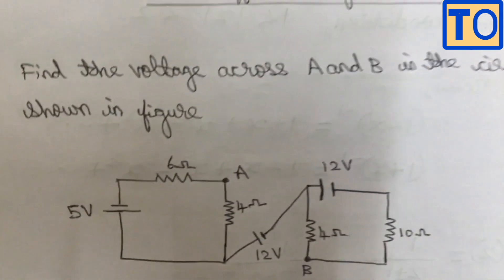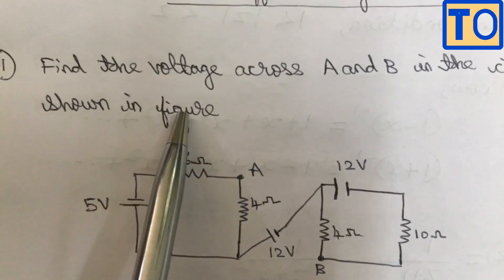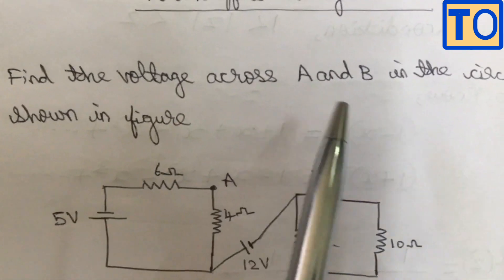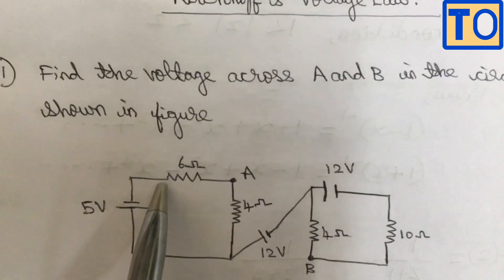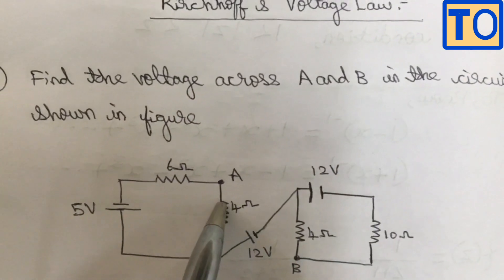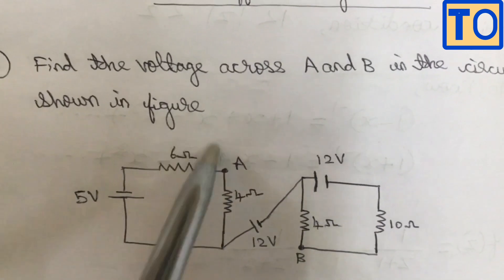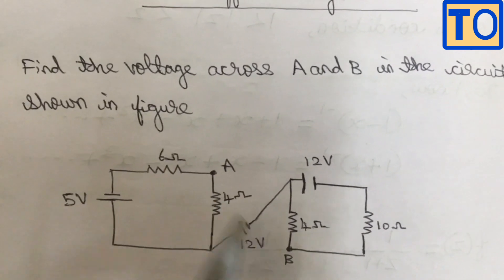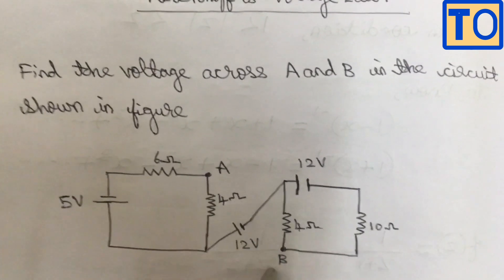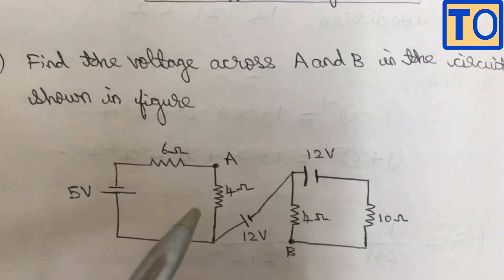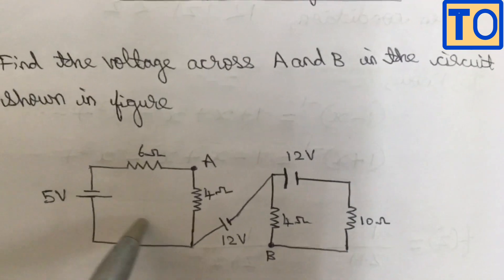That is the circuit diagram. That is the most important thing. The voltage across A and B in the circuit as shown in the figure — you can see the 2 points A and B. The circuit is called an area that is the most complex.